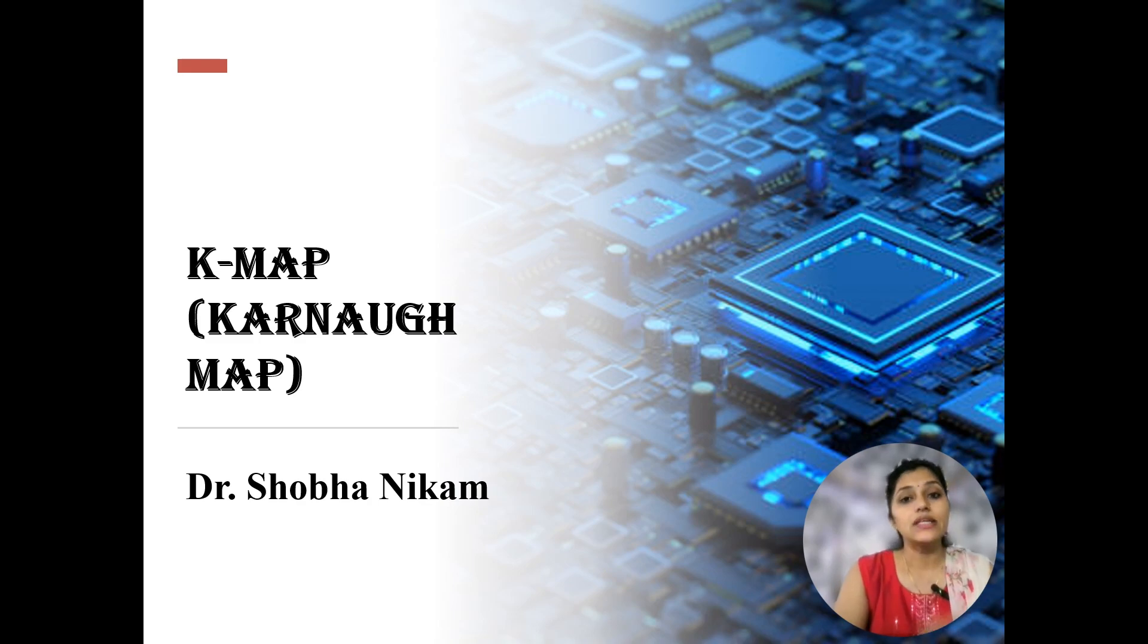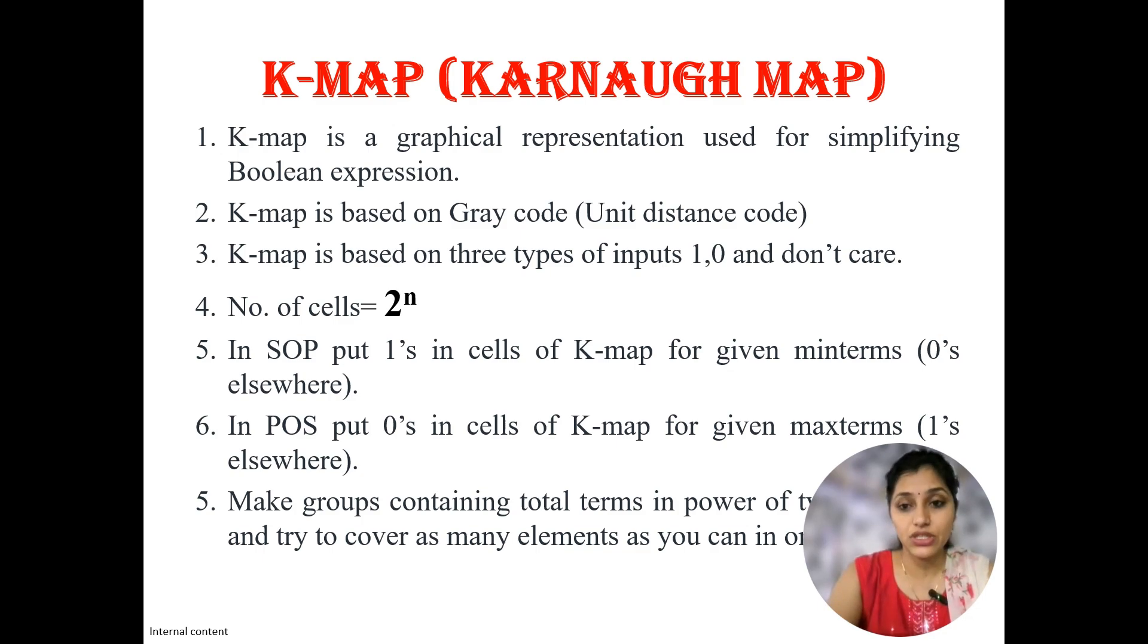When less number of hardware or gates are there, then power dissipation reduces, size of board also reduces, and speed increases. K-map is nothing but a graphical representation used for simplification of boolean expression. In K-map, instead of binary numbers, we use unit distance code or gray code. In K-map we can insert three types of inputs: 0 and 1 and third input is don't care. Don't care means for these inputs it is designer's choice to consider them as 1 or 0.